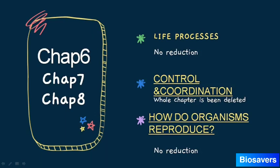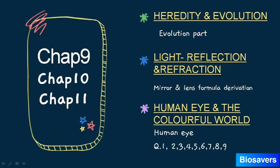Chapter 7 — Control and Coordination — has been fully deleted; we do not need to study it at all. Chapter 8 has no reduction — the full chapter needs to be completed. There is no deletion in any of the topics of Chapter 8.